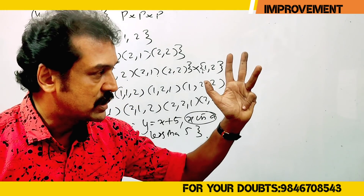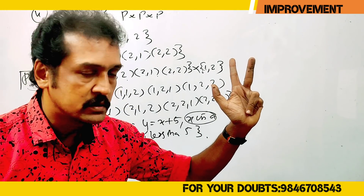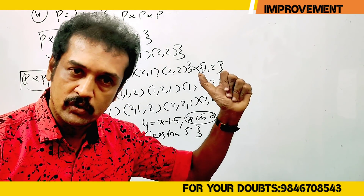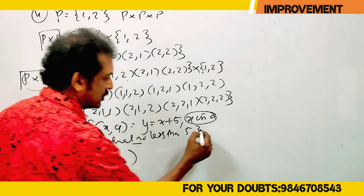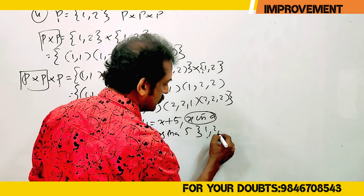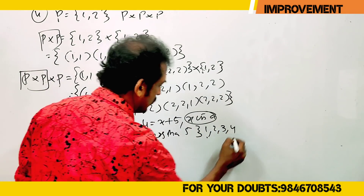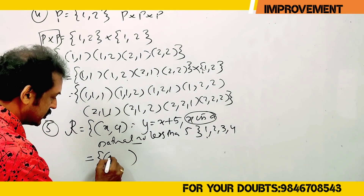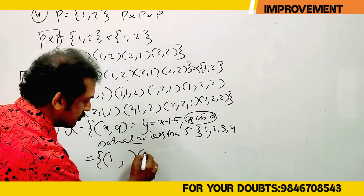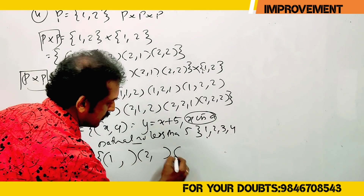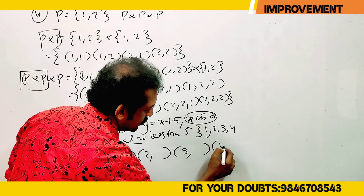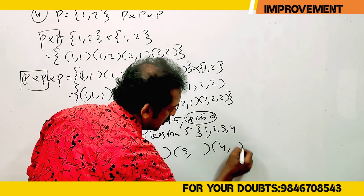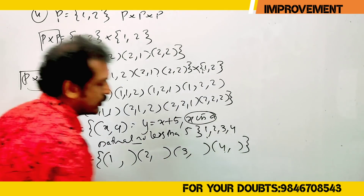The natural number base values are 1, 2, 3, 4. The values are 1, 2, 3, 4. This gives 4 elements.